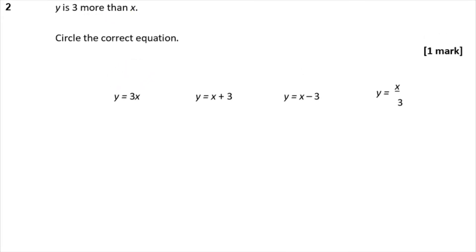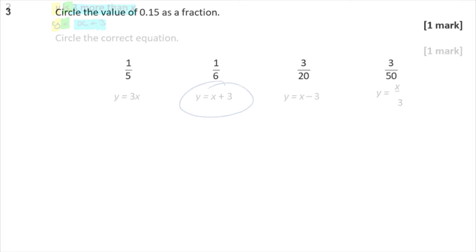Question 2: Why is 3 more than x? Circle the correct equation. Let's just decode this: Y equals x plus three. So y is y, is means equals, and I've just rewritten three more than x as x plus three. So the answer is y = x + 3.